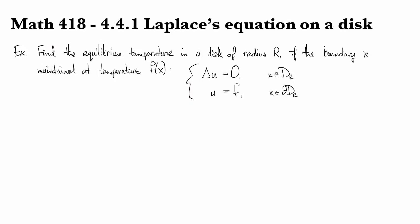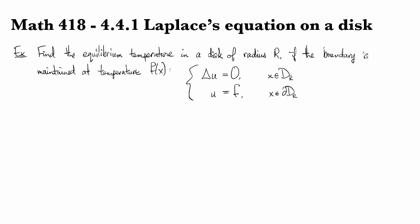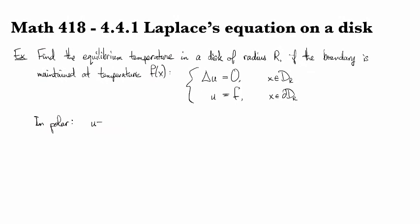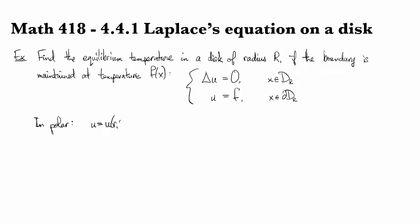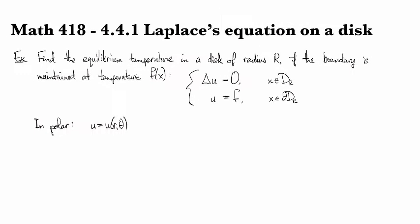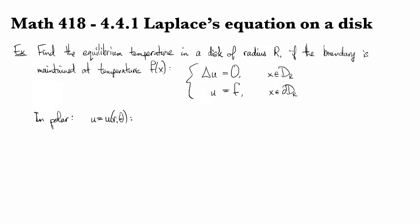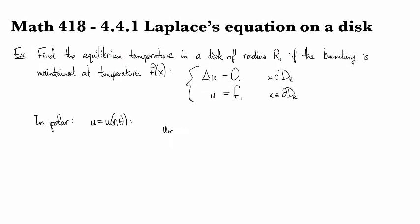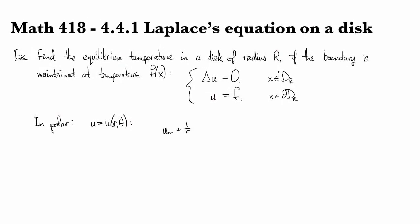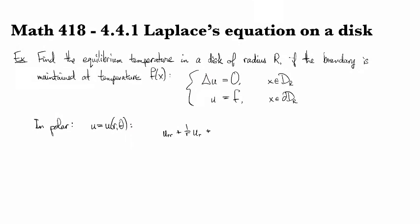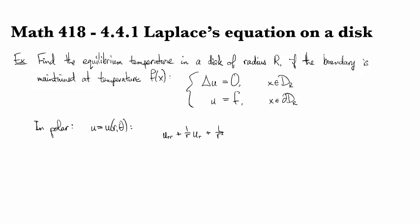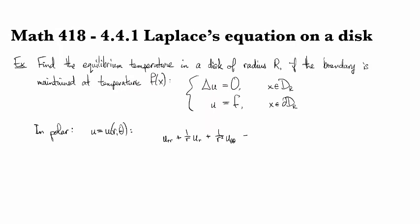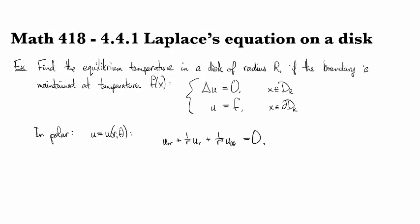We'll set this up in polar coordinates. So u as a function of r and theta, the formula for the Laplacian in polar is u_rr plus 1 over r times u_r plus 1 over r squared times u_θθ. That's our Laplacian in polar coordinates, and it should equal 0.